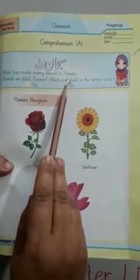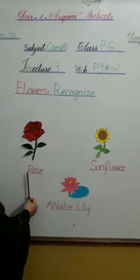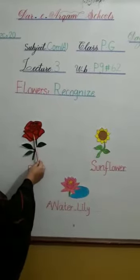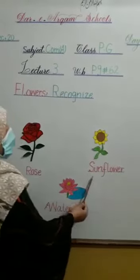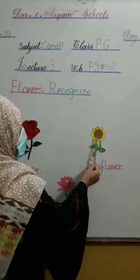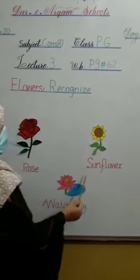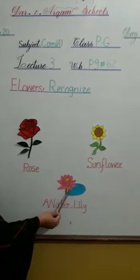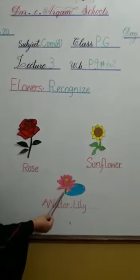Okay students. The first flower is rose. Rose is red and green. The next flower is sunflower. Sunflower color is brown, yellow and green. The next flower is water lily. Water lily is pink, yellow, and green.